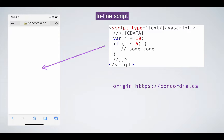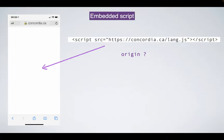Another approach is to reference a JavaScript file stored elsewhere on the same domain — for example, a file called lang.js at concordia.ca. The browser creates a new request to fetch that file, then places it in the DOM tree as a resource. The origin assigned to it is concordia.ca, because that's where the JavaScript came from.